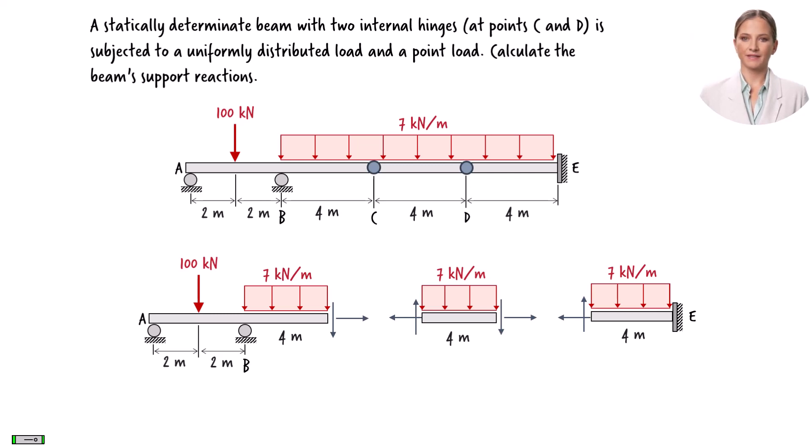To accurately represent these internal forces, we must show the axial and shear forces on the left and right sides of each hinge. The two axial forces must be shown in opposing directions. If one is oriented to the left, the other should be directed to the right.